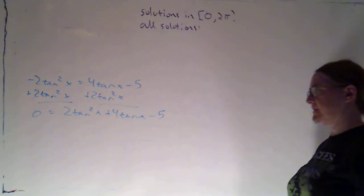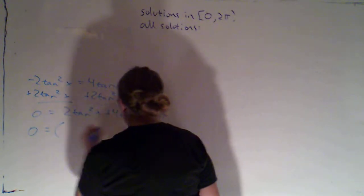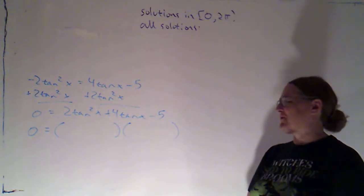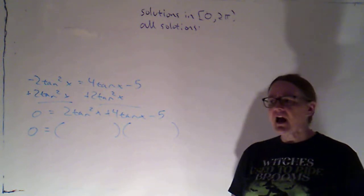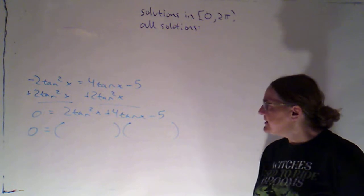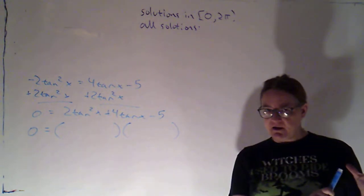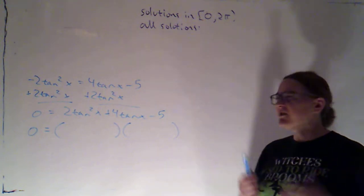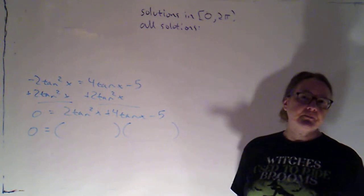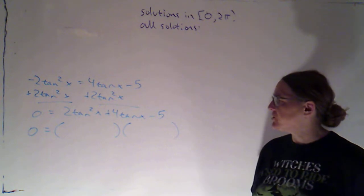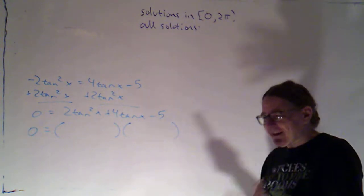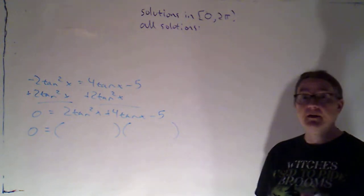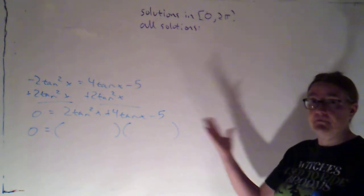I'm highly suspicious that this does not factor — largely because this is in the section on using the quadratic formula. But I'll check anyway. Even if it did factor, the quadratic formula is always a viable option. If it does factor, factoring is usually easier and my go-to. But if you're unsure, you can always fall back on the quadratic formula — always a legitimate option when you have a quadratic.